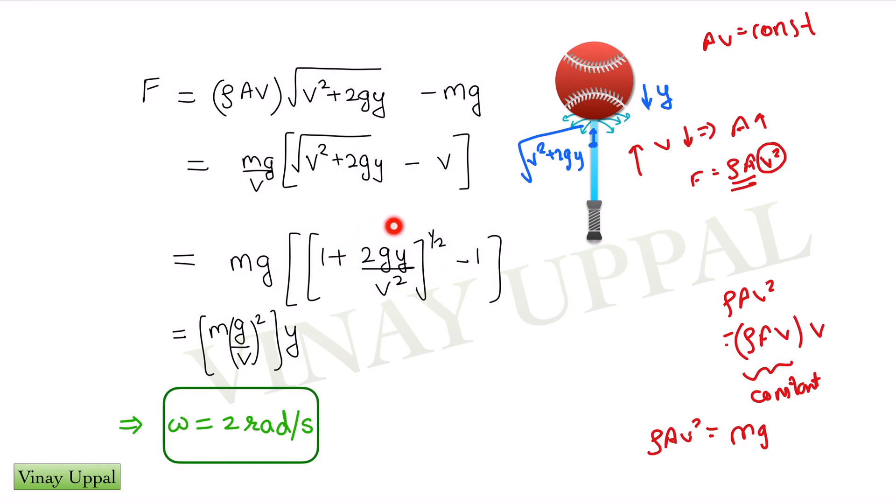Performing binomial approximation here, I will get 1 + half times 2gy/v² minus 1, this expression here. And the ones get cancelled out and we are left with a force that is proportional to y and thereby resulting in SHM for small oscillations.